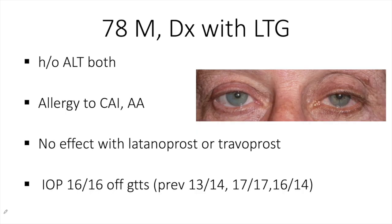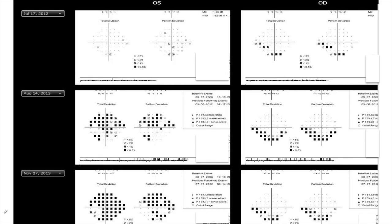The next patient is a 78-year-old male with history of low-tension glaucoma who had ALT in both eyes. He had allergies to carbonic anhydrase inhibitors and alpha agonists, and did not have an IOP-lowering effect from latanoprost or travoprost. Pressure off drops was 16, and while on drop therapy, pressures were in the mid to high teens. On visual field testing, the inferior visual field defect on the right side worsened between 2012 and 2013, and there was a dramatic increase in the visual field defect both superiorly and inferiorly on the left-hand side between 2012 and 2013.